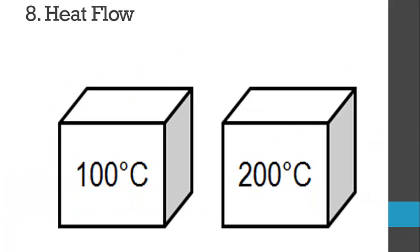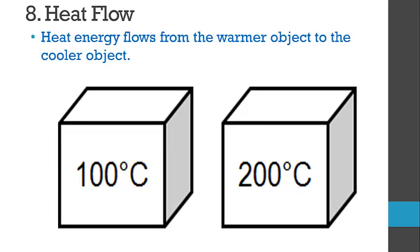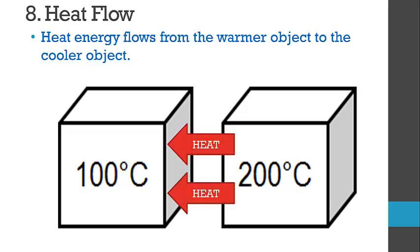The next question is about heat flow. With two blocks — one at 100 degrees Celsius and one at 200 degrees Celsius — heat energy always flows from warm to cool. The direction of heat flow is from the warmer block to the cooler block, and this continues until both blocks reach the same temperature. If in isolation, they might both reach 150 degrees; if on a desk, heat exchanges until room temperature is reached.